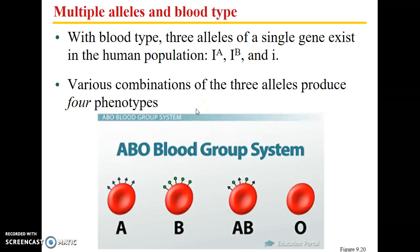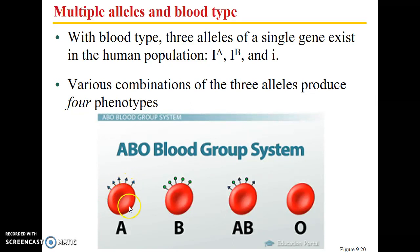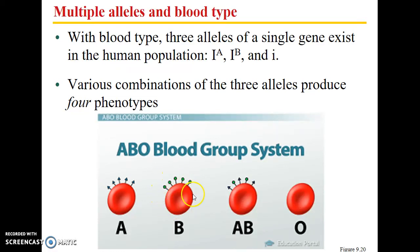Various combinations of those three alleles produce four different phenotypes. This relates to an ID tag on our red blood cells, part of what's known as the glycocalyx — a combination of proteins, carbohydrates, and lipids that give red blood cells a unique identity. Blood type A and blood type B each have different organic compounds contributing to the glycocalyx. Blood type AB has both types being made, and blood type O is the absence of both A and B.